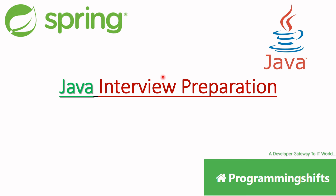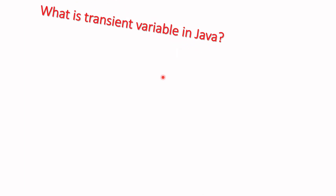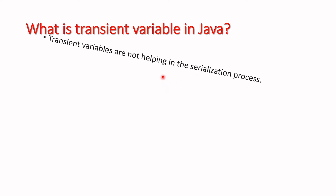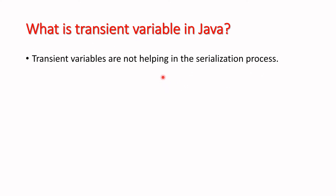We are going to learn about a new question that is generally asked in the interview room. Let's understand from scratch: what is a transient variable in Java? As we know, Java gives you some features to serialize data — serialization means if you want to store data in a different format, like if you have data in integer or some readable code in a high-level language.